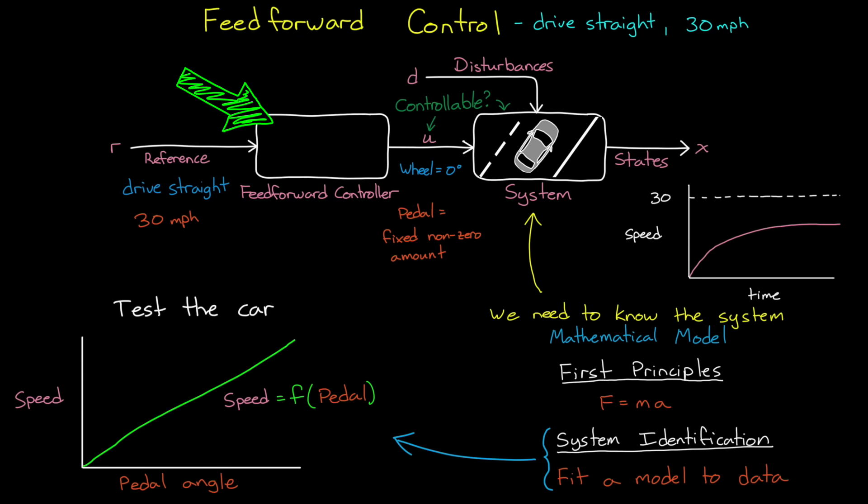Now, for the feed-forward controller itself, we could just use the inverse of that model to get pedal position as a function of speed. So, given a reference speed, the feed-forward controller would be able to calculate the necessary control input.